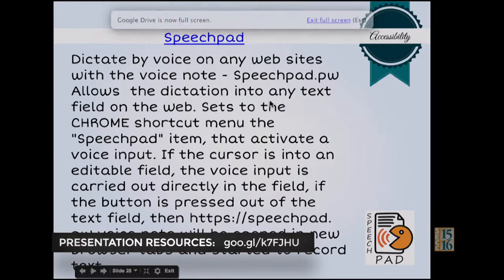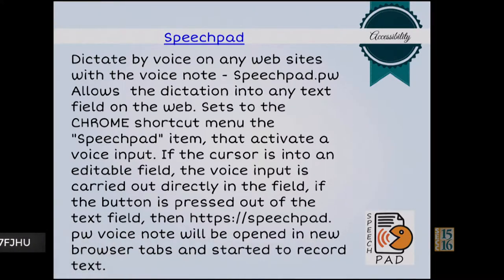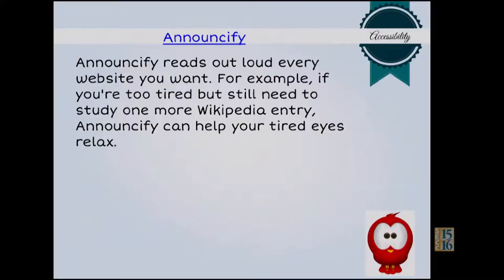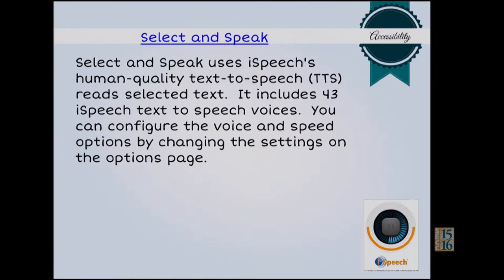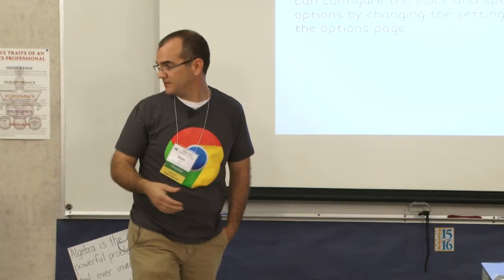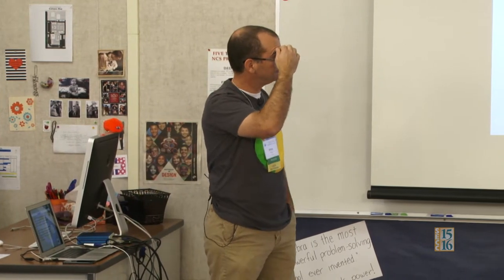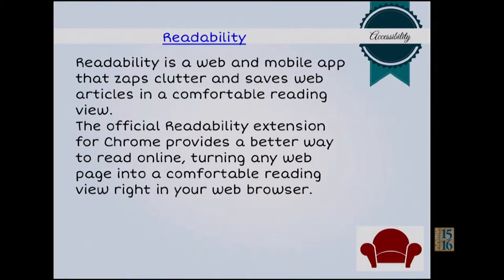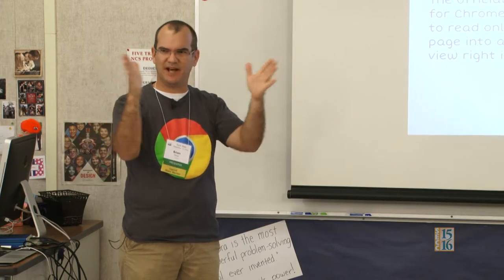Speech Pad is another accessible one — you can highlight or copy what you need on the text and just hit playback and it'll play it for you. Announcify is another speech-to-text — you can change the speed of the audio. If you want to slow it down you can, for possibly slow readers. Select and Speak — this has been a growing trend of being able to highlight what you see on the page and have it read back to you. Speak It is another one that's good because it can read text in more than 50 languages. Readability is a web and mobile app that zaps clutter — it minimizes down to almost one column of text you can read.